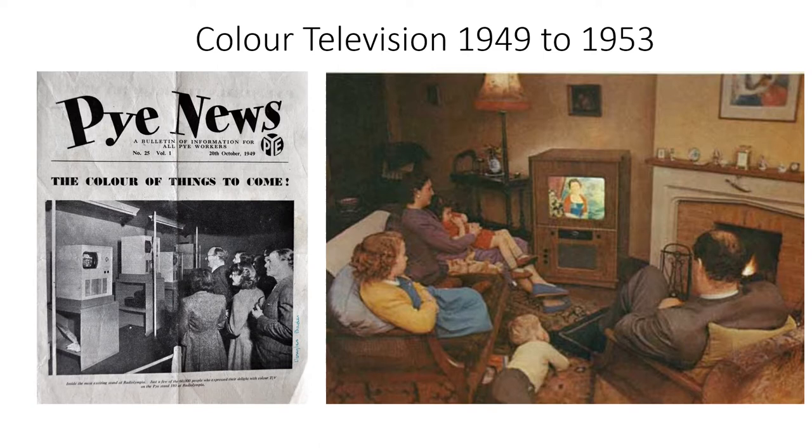Pye demonstrated sequential color TV based on the CBS system at the Radio Olympia show in London in 1949, and later at Queen Elizabeth II's coronation in 1953, by which time they were using cathode ray tubes that could show color without the need for a rotating disc.